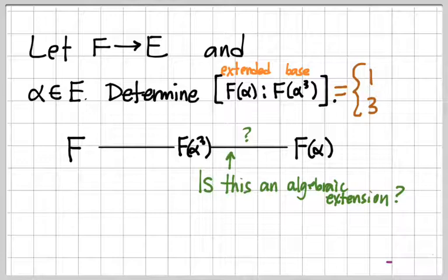So we don't know, for example, that alpha is even algebraic over f. Alpha could be pi, and f be the rationals, or something like that. We don't know.